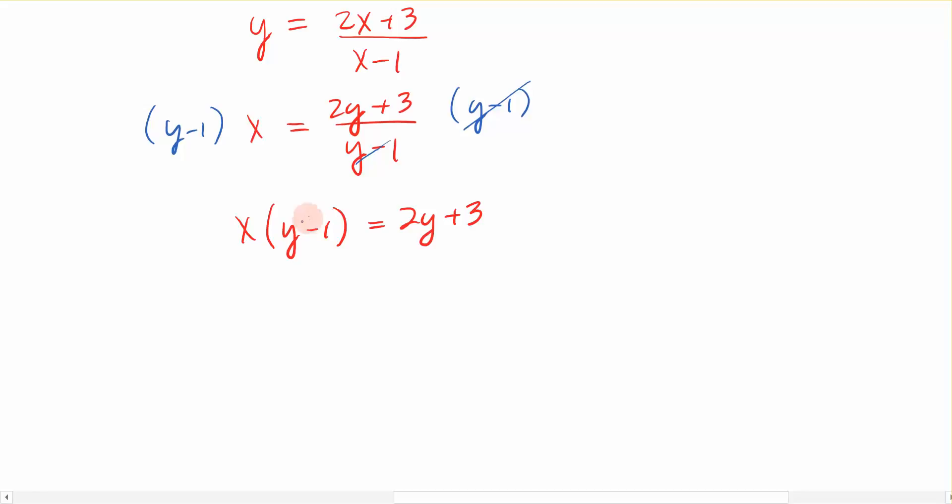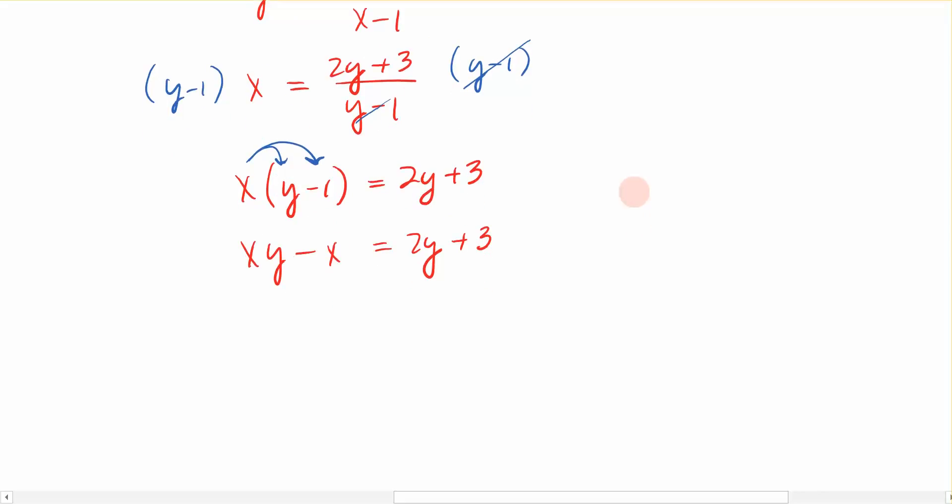The next thing we want to do, y is inside of the set of parentheses, so I'm going to distribute x to remove the parentheses. So xy minus x equals 2y plus 3. Again, go back to what you're trying to do here. I'm trying to get all the y, or I'm trying to get y by itself. So I have a y term on the left and a y term on the right.